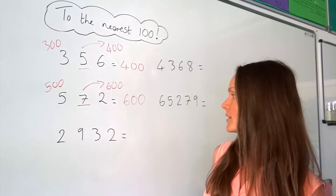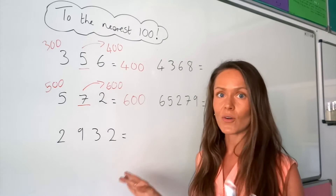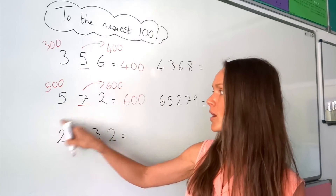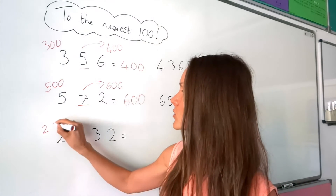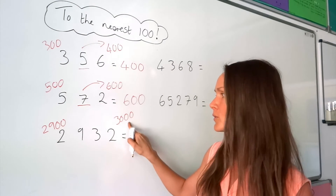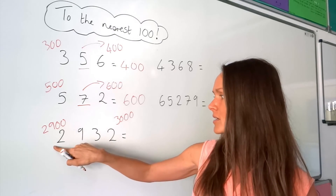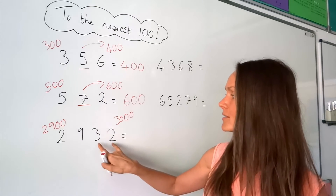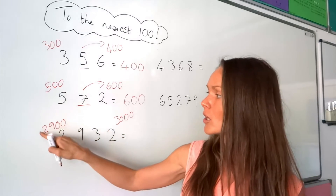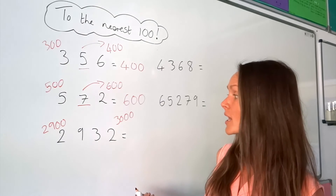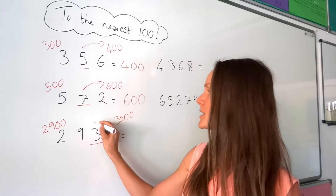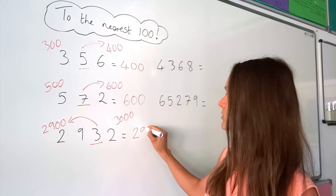This one has a bigger number, but it's exactly the same method. I'm going to write down the two multiples of 100 either side — I've got 2900 and 3000. If you can't see where those come from, the smaller number is just this number written out again but with the last two digits replaced by two zeros, and the bigger one is found by adding 100 to it. This time the second from last digit is smaller than five, so we round down — the answer is 2900.